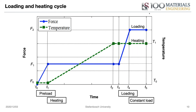In terms of our loading and heating cycle: since we are interested in creep damage, we employ a constant load type test. Sequentially, we first apply a small preload, followed by gradual heating to the maximum control temperature, then allow for temperature field stabilization between T2 and T3. Subsequently, we load the sample to the designated load and remain at that load either until failure or until the test is completed.